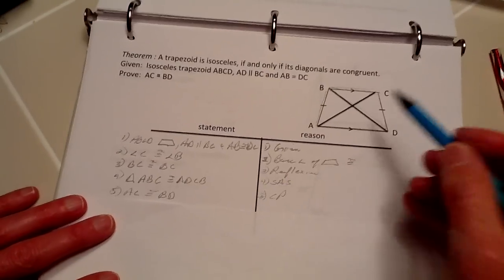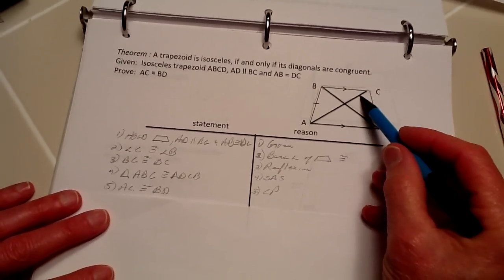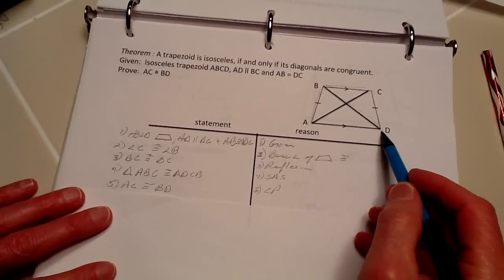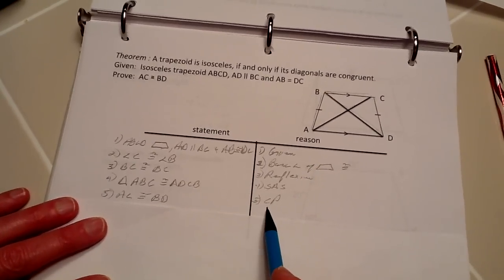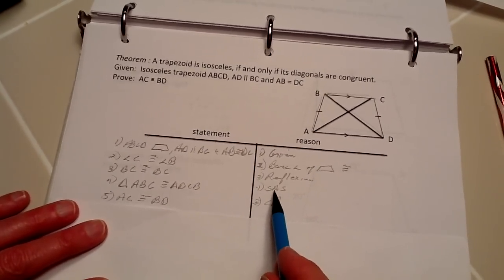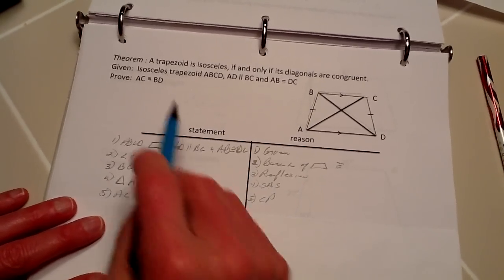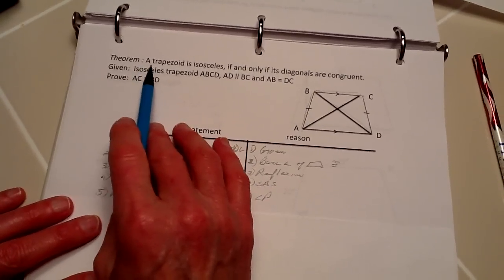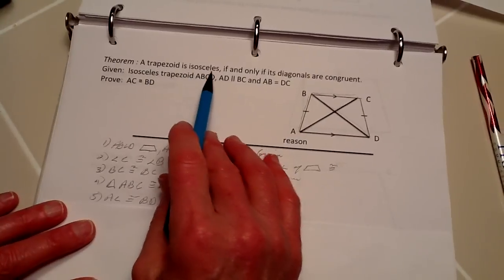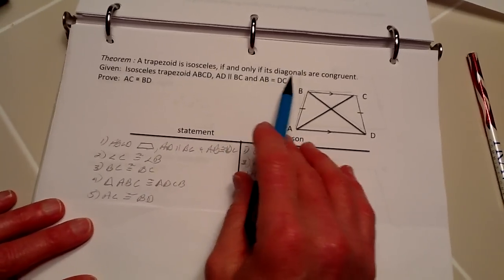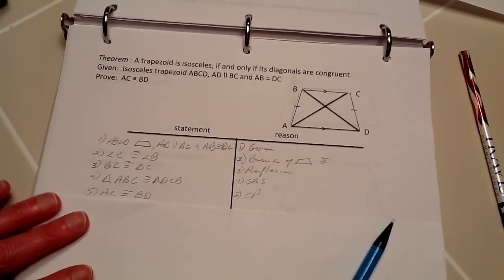Next, from that we know that AC and BD are congruent because they are corresponding parts of the two congruent triangles. And here we have proven that a trapezoid is isosceles if and only if its diagonals are congruent. Thank you.